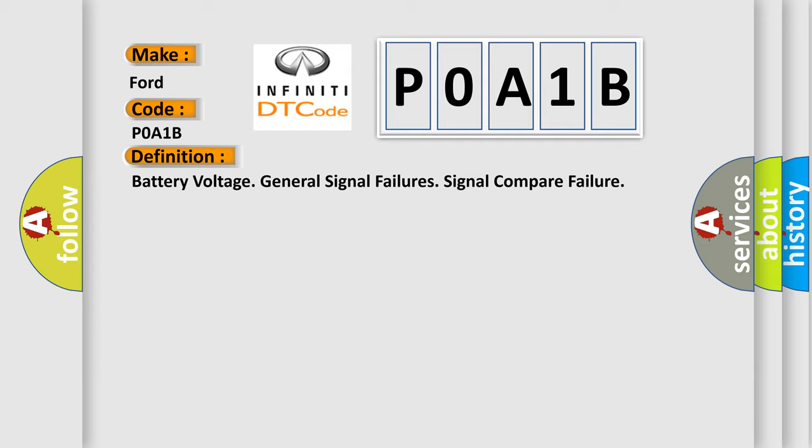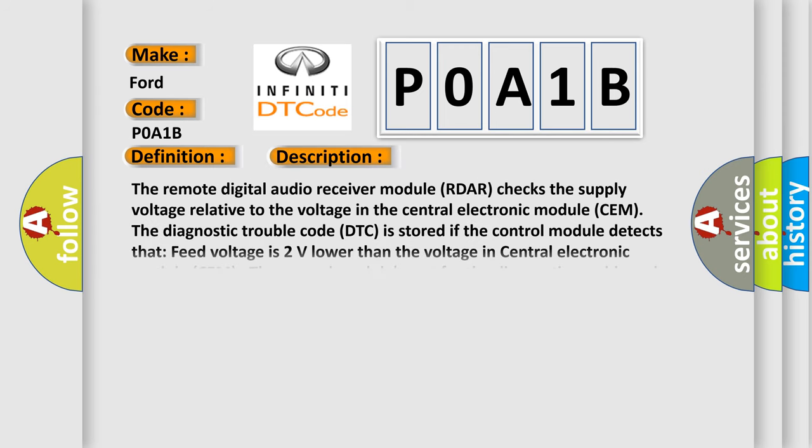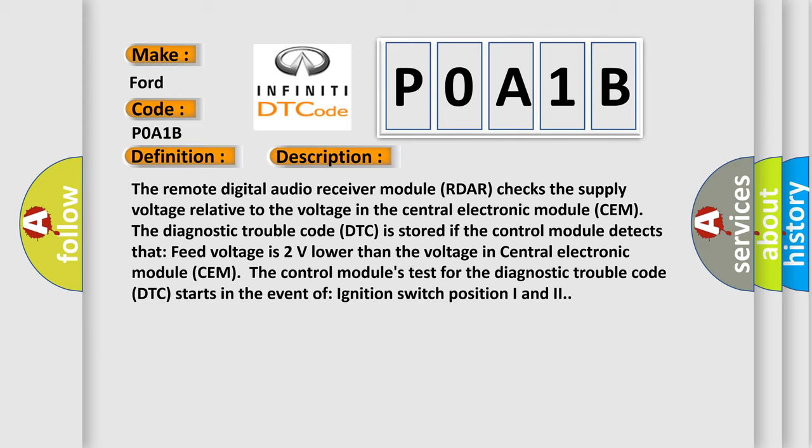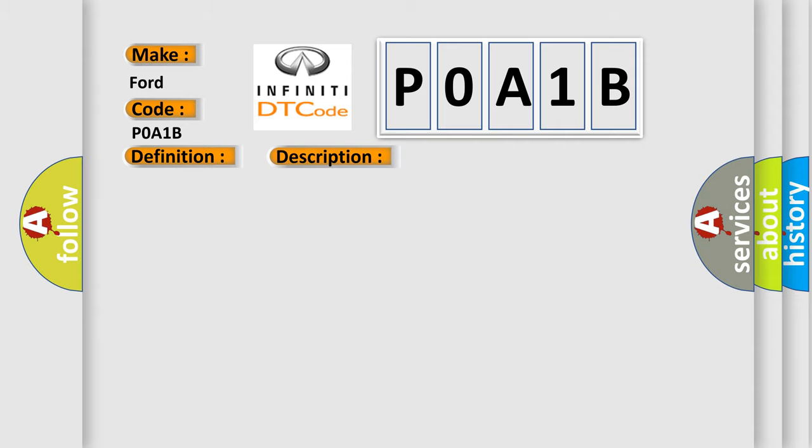The remote digital audio receiver module RDAR checks the supply voltage relative to the voltage in the central electronic module SEM. The diagnostic trouble code DTC is stored if the control module detects that feed voltage is 2 volts lower than the voltage in the central electronic module SEM. The control module's test for the DTC starts in the event of ignition switch position IN2. This diagnostic error occurs most often due to contact resistance damage to the supply voltage cable.